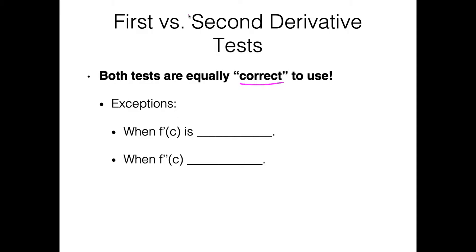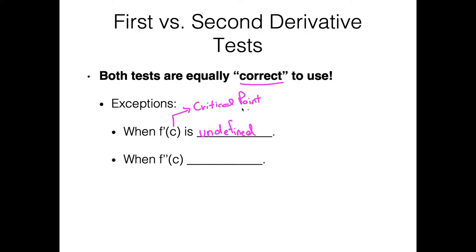However, there are two exceptions you should know. The first exception is when f prime of c is undefined — where c is our critical point. Because if you remember, the definition of a critical point does allow our first derivative to be undefined at that point, provided the point is still within the domain of our original function. In this case, you actually can't use the second derivative test because you can't take a second derivative there. So you really have to use the first derivative test.